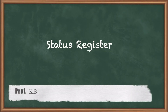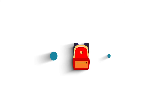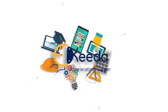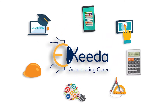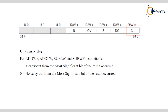Hello students. Today we'll see the Status Register. The Status Register is from SFR — Special Function Register. The Status Register is 8-bit, but from those 8 bits only 5 bits are useful and the rest of the 3 bits are unused, indicated by U0, U0, and U0. The 5 useful bits are Carry, Digital Carry, Zero, Overflow, and Negative.